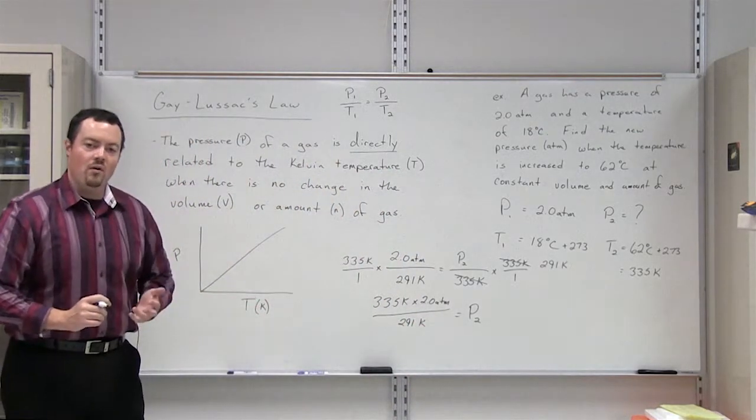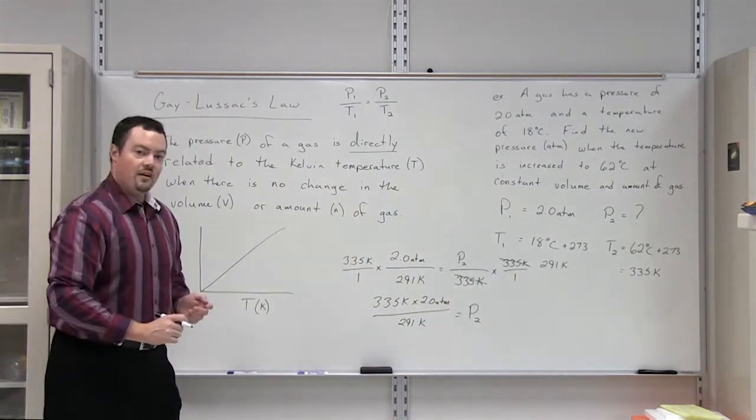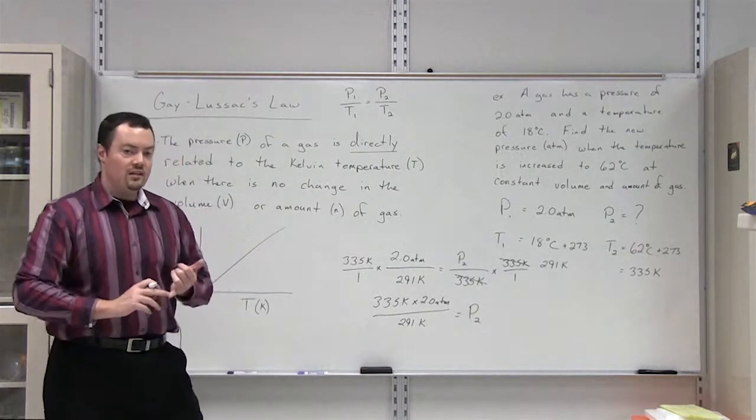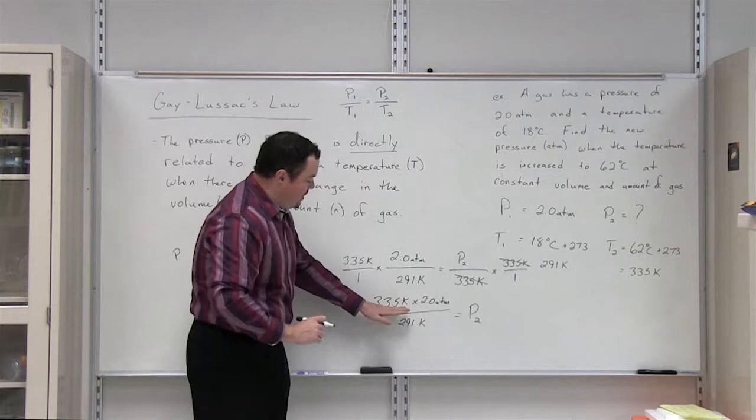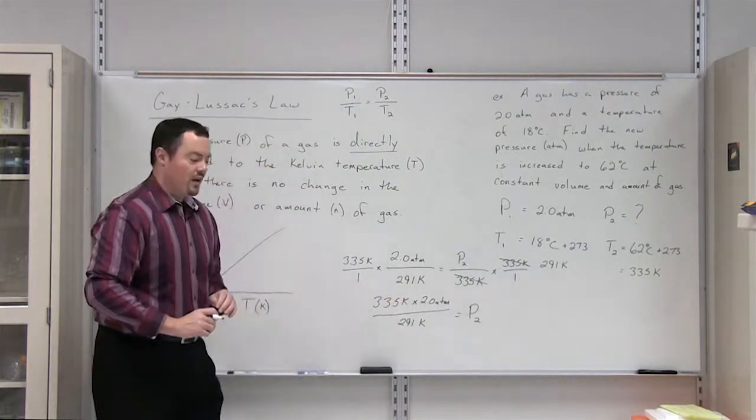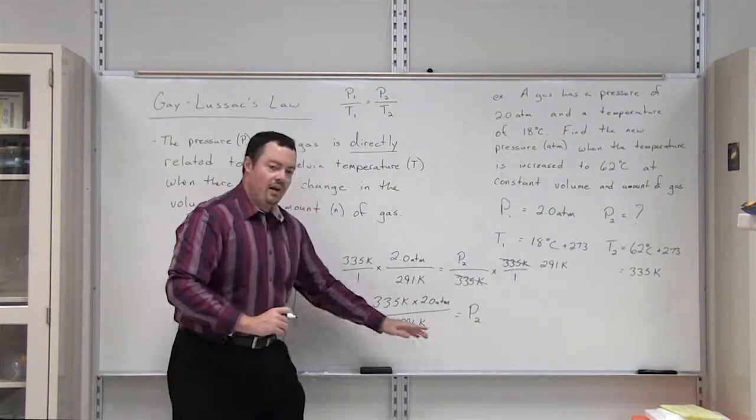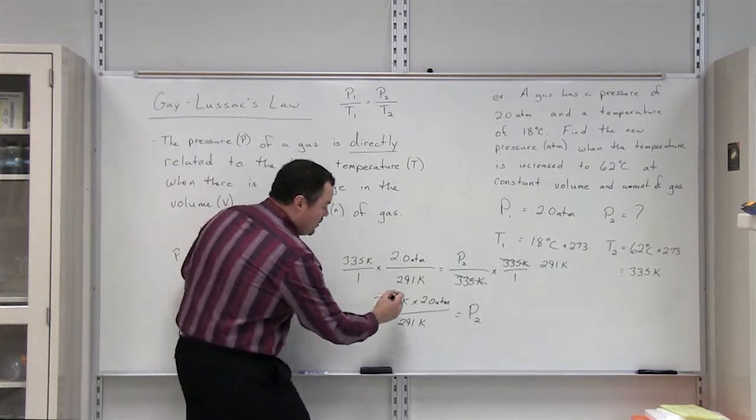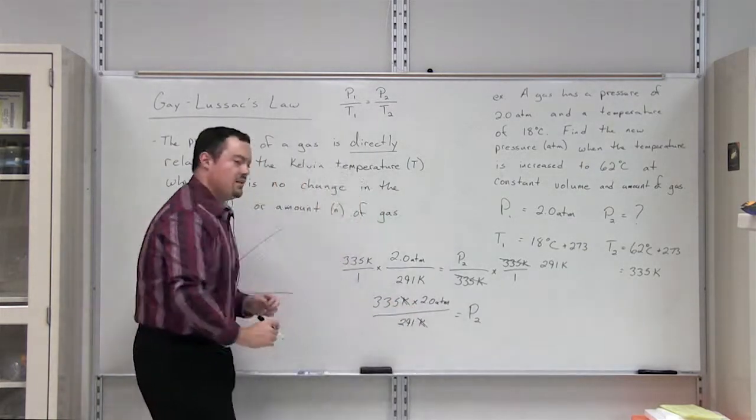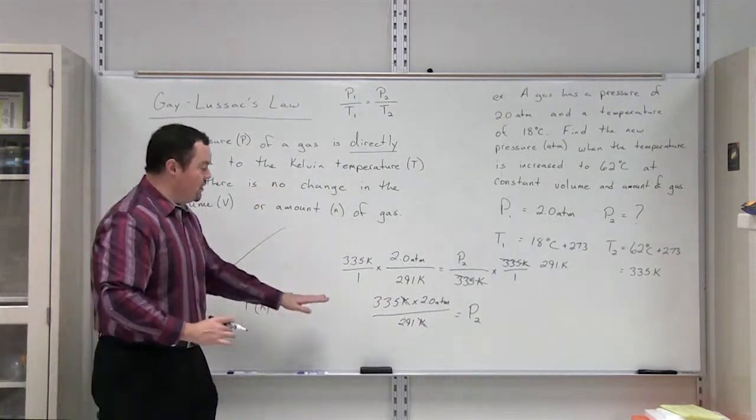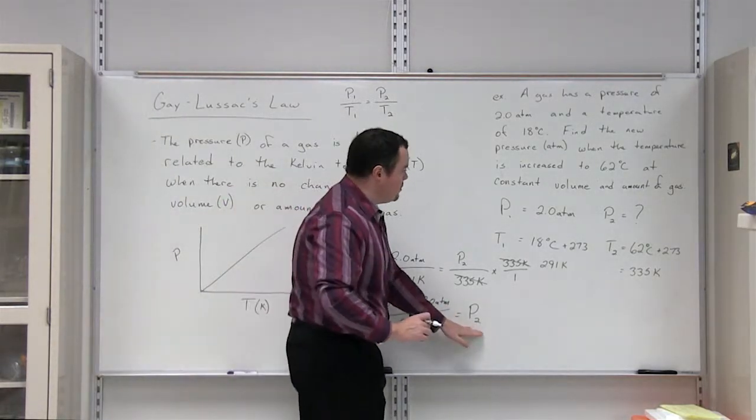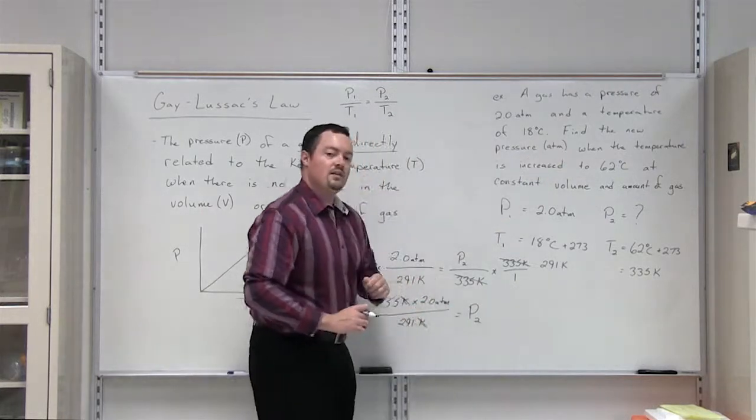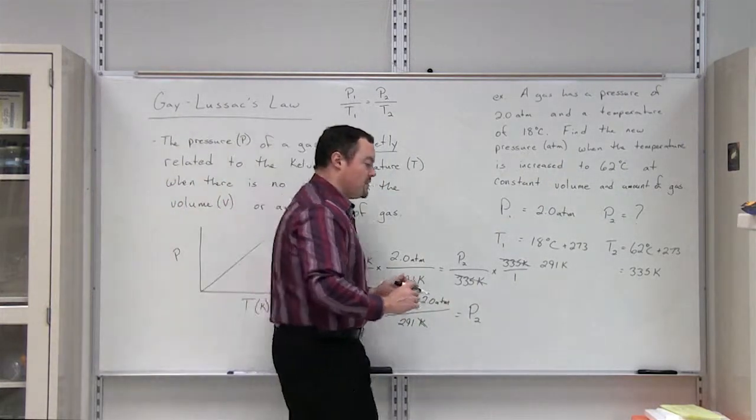Now, how do we know that we've set up the equation in the correct way? Well, we can look at the units and which units cancel out in order to do that. You see here that we have Kelvin in our numerator. We also have Kelvin in our denominator. Those can cancel out. The only unit that we're left with is that of atmospheres. Turns out pressure has the unit of atmospheres.